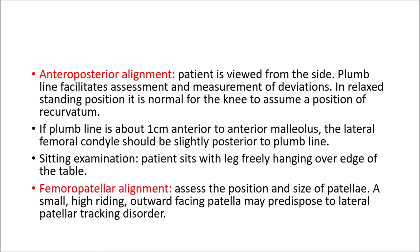Next is the anterior posterior alignment. The patient is viewed from the side and a plumb line facilitates assessment and measurement of deviations. If the plumb line is 1 cm anterior to the lateral malleolus, the lateral femoral condyle should be slightly posterior to the plumb line. Abnormal angulation in the sagittal plane can be documented by measuring the distance from the plumb line.